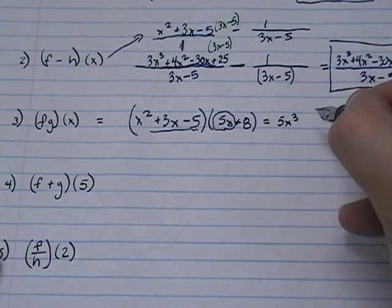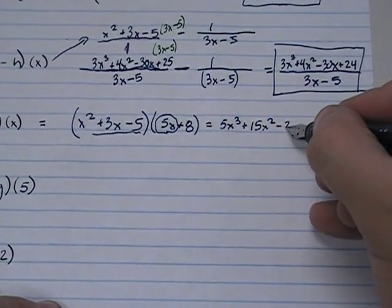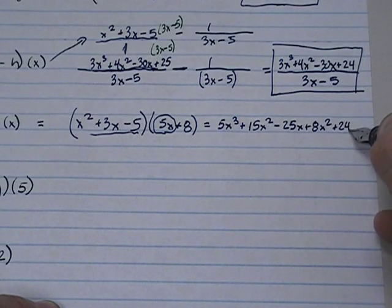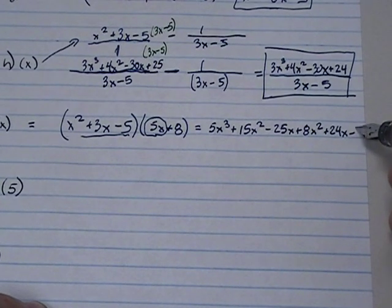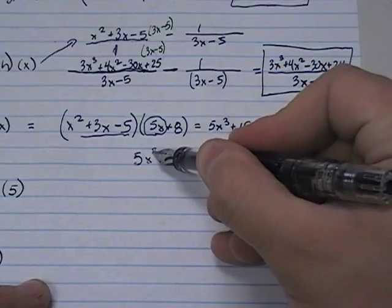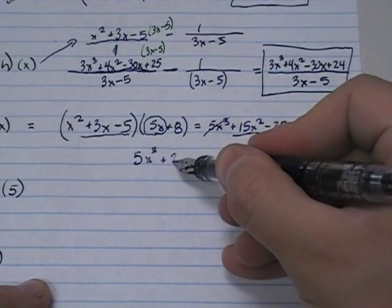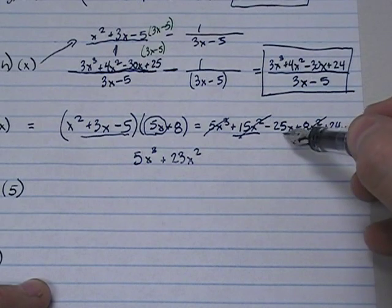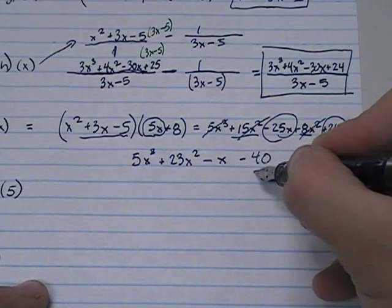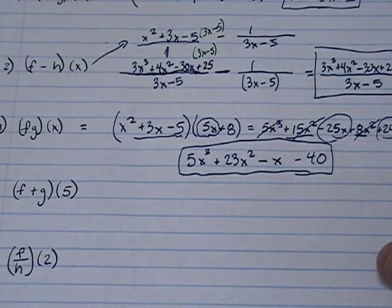We distribute, we get 5x cubed plus 15x squared minus 25x plus 8x squared plus 24x and then minus 40. And then we have to combine our like terms. 5x cubed has no like terms. x squared, I have two terms: 15 and 8, which gives 23x squared. x terms, I have negative 25 and positive 24, which gives me negative 1x. Then copy the minus 40. And there is your multiplication, f times g.